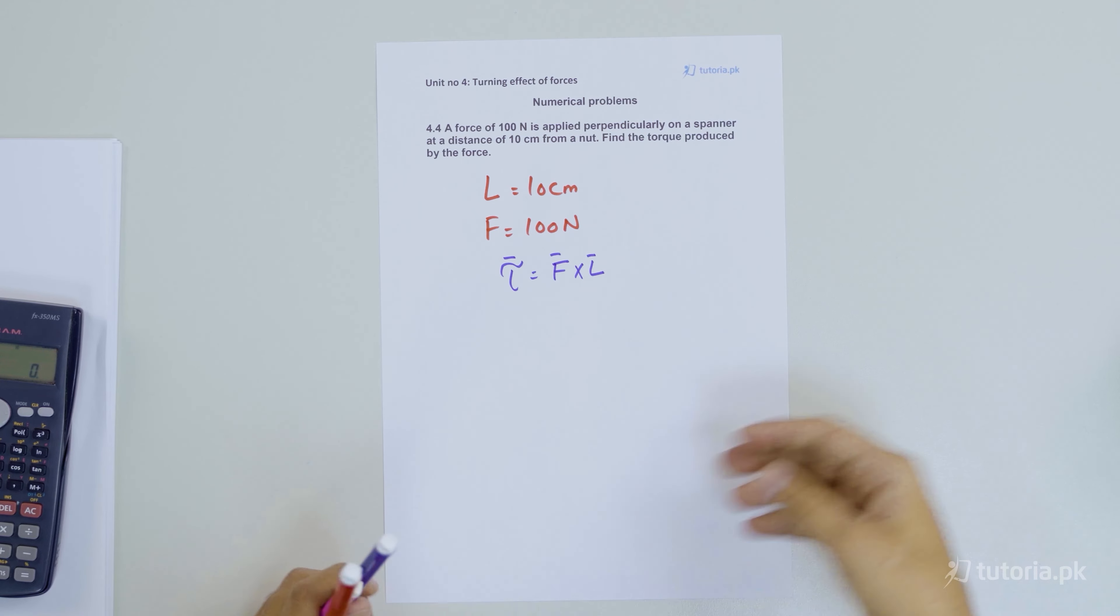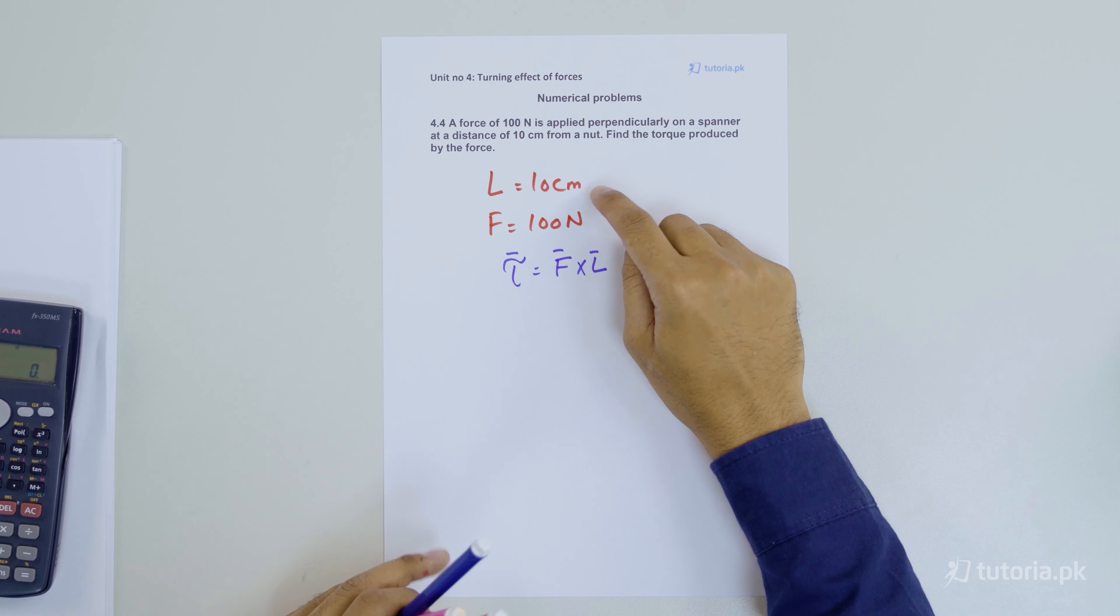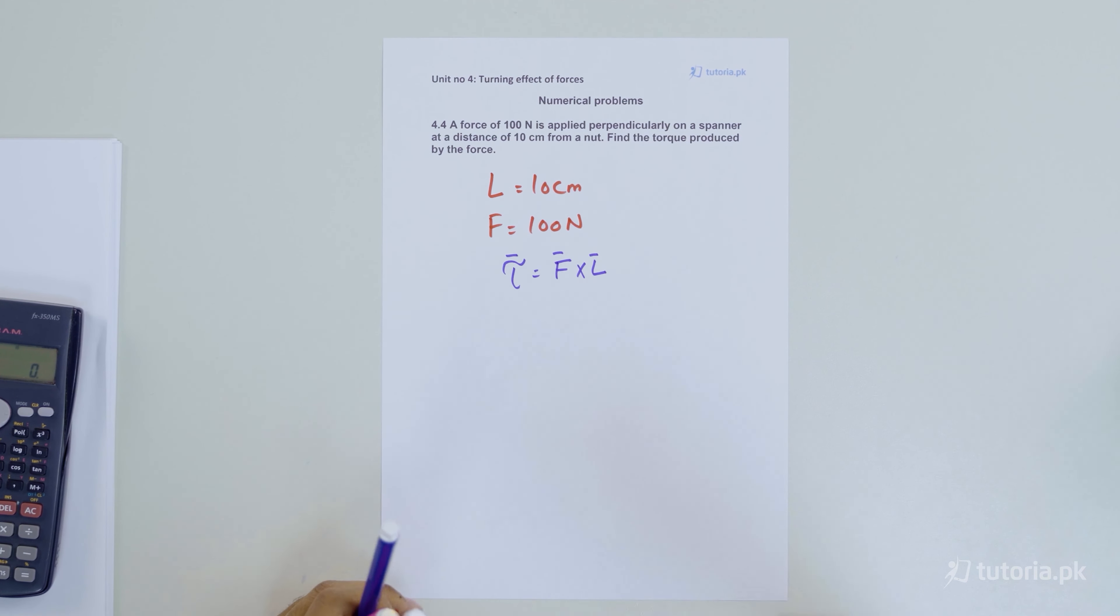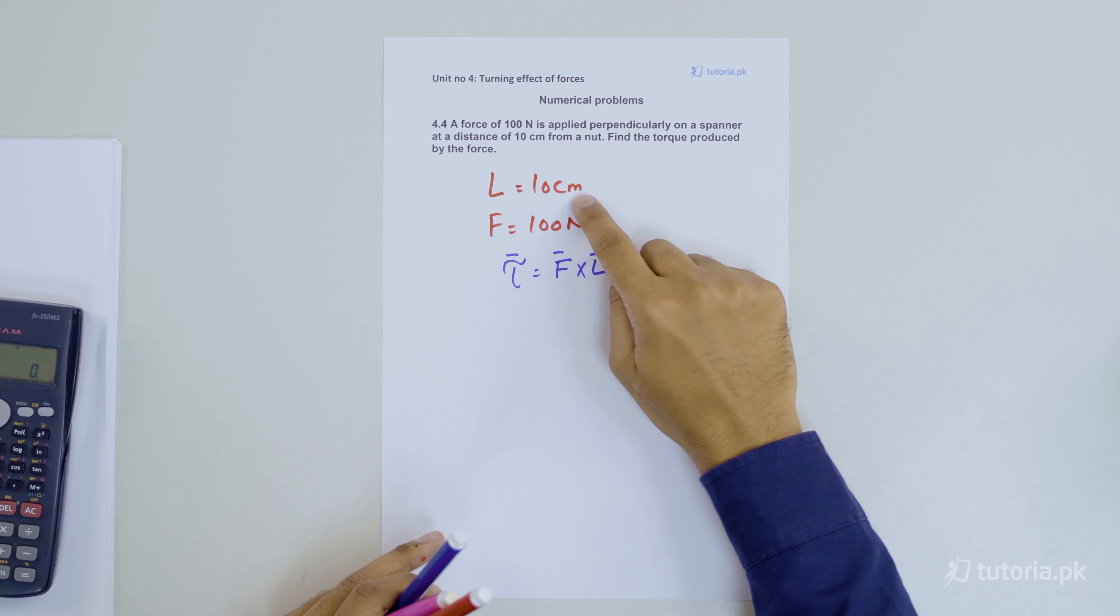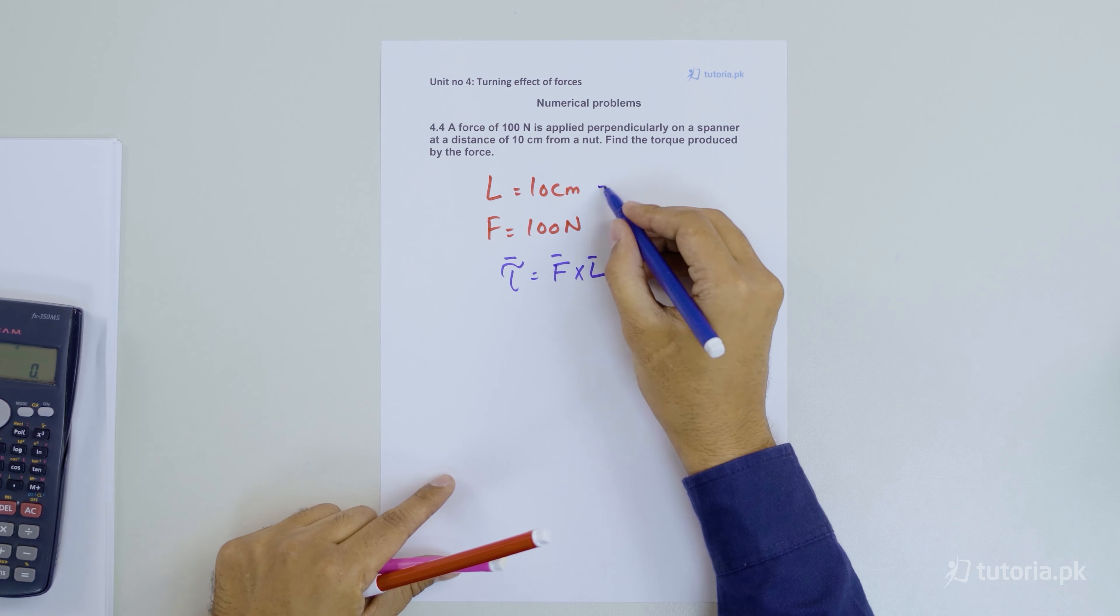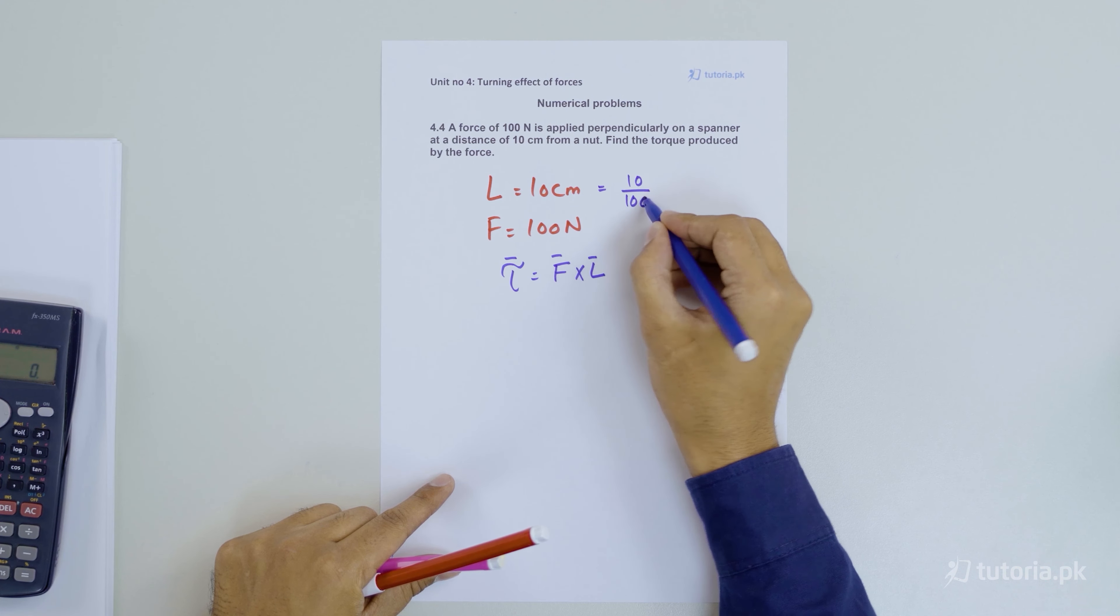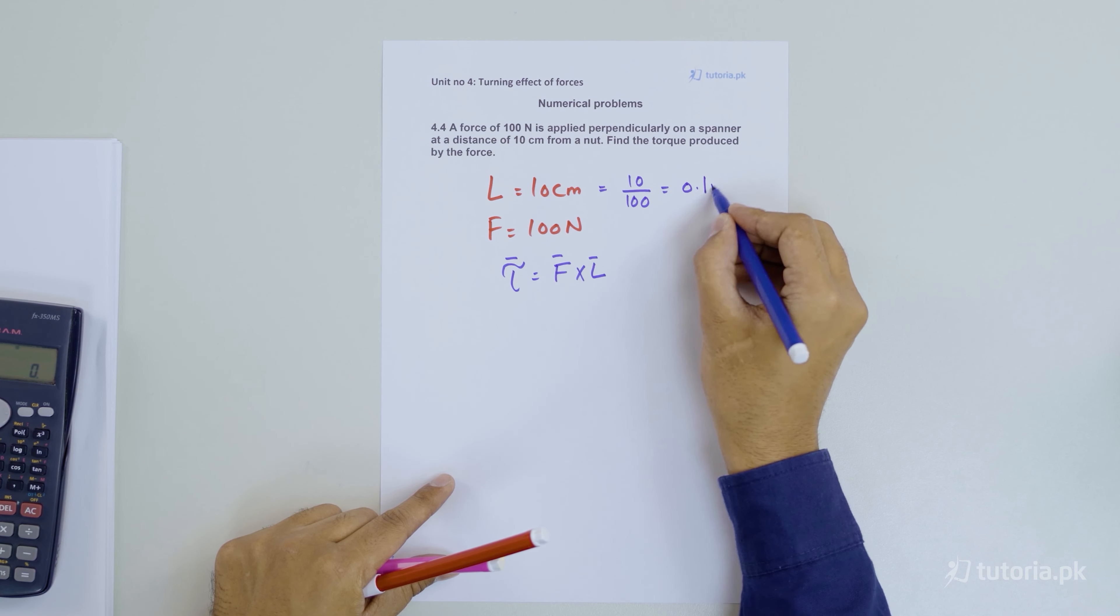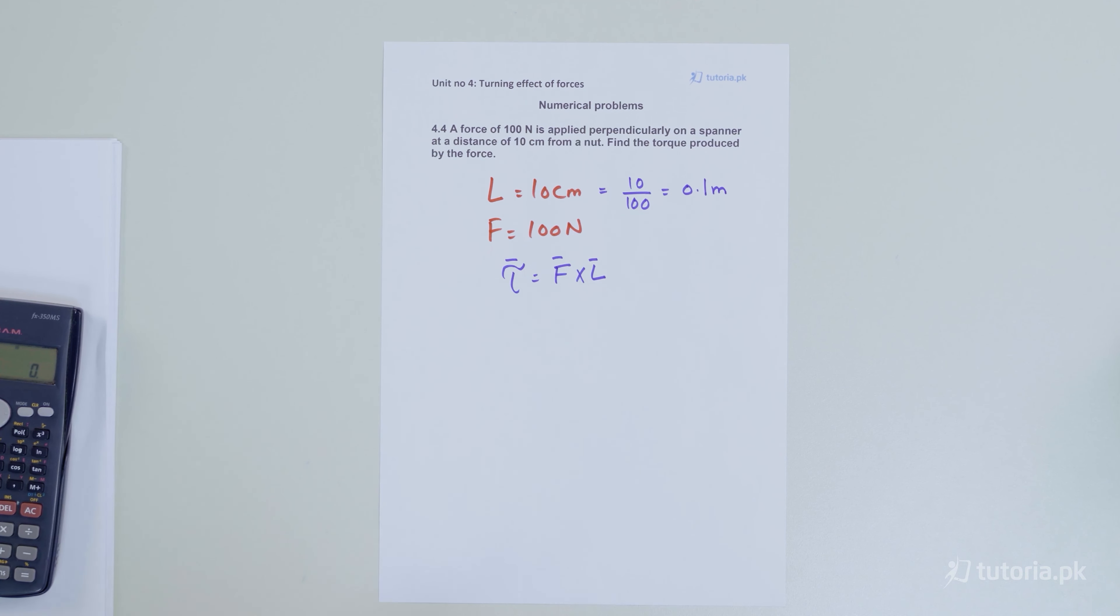What do we do? We make this practice that when we put any value in our formula, we will try to use our SI units. If we have 10 cm, we will convert it to meters. We will convert 10 cm by dividing by 100. Then we have 0.1 meters. Now we have the moment arm, it is 0.1 meters.